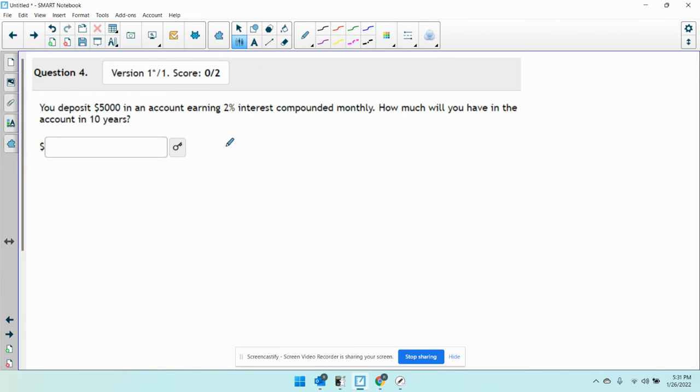So this is just going to be a compound interest problem. So we have P sub N, that's our end amount, equals P sub 0 times the quantity 1 plus R over K to the NK power.